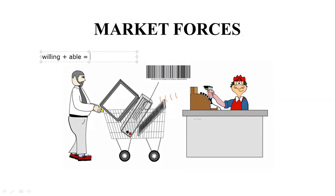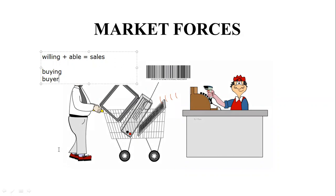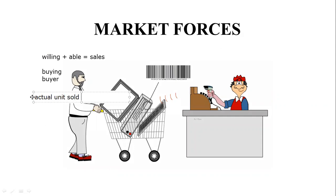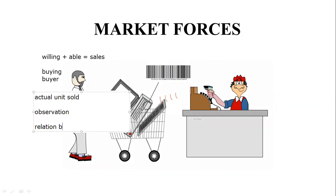This is what represents sales from the perspective of the seller. The person who is buying is the buyer, and there are a lot of factors affecting buyers — he prefers certain items and has a certain income. This is what represents actual units sold, which is the observation we are going to use to represent the relation between the price and the quantity demanded.